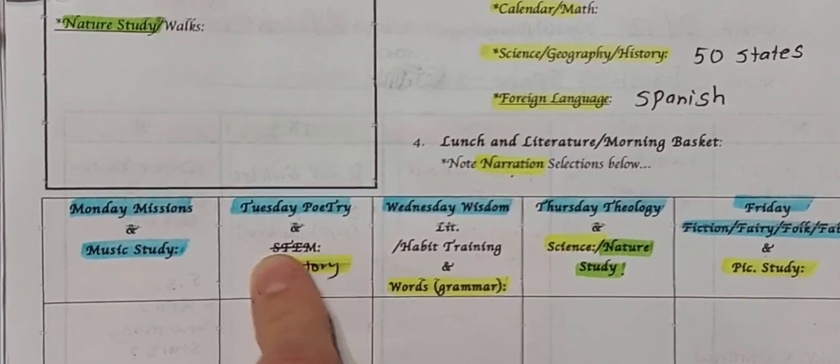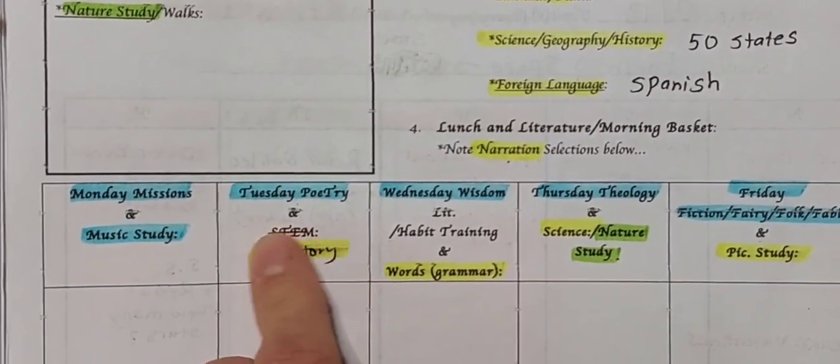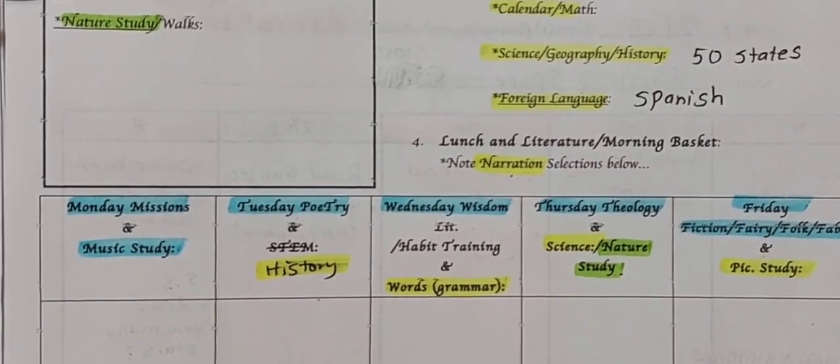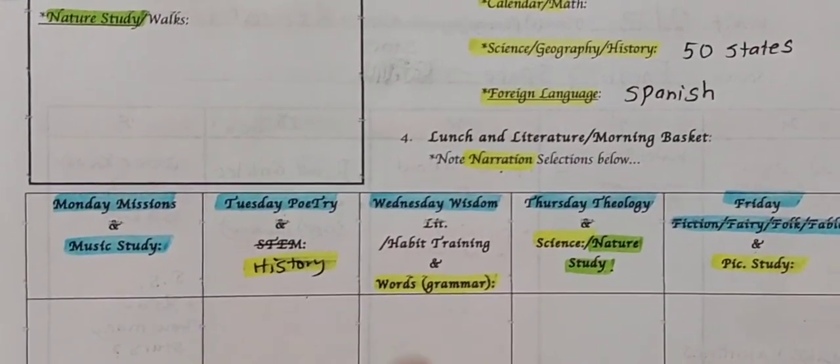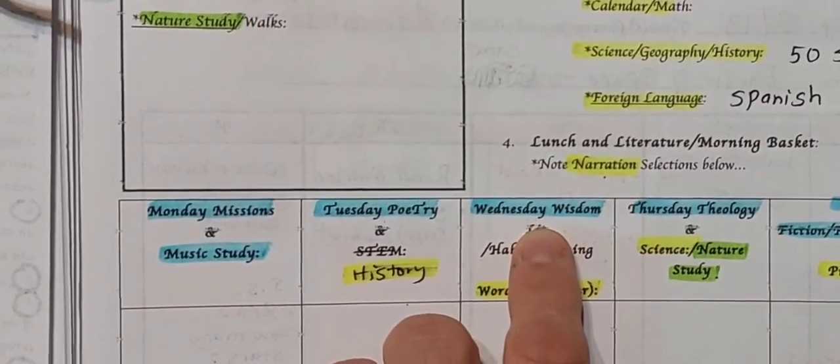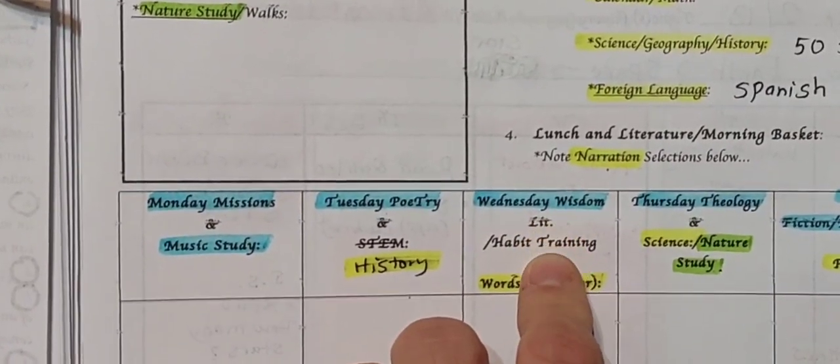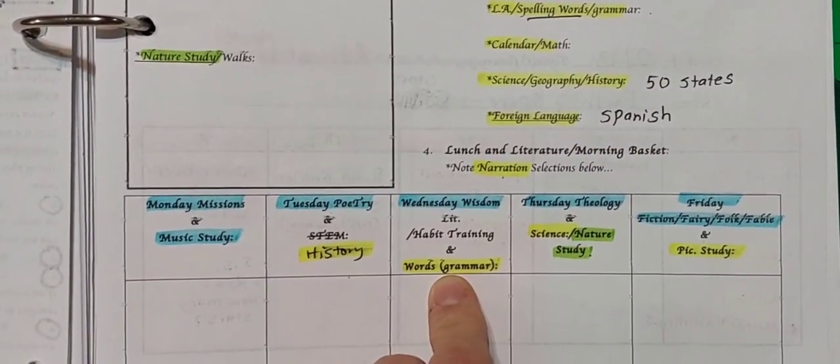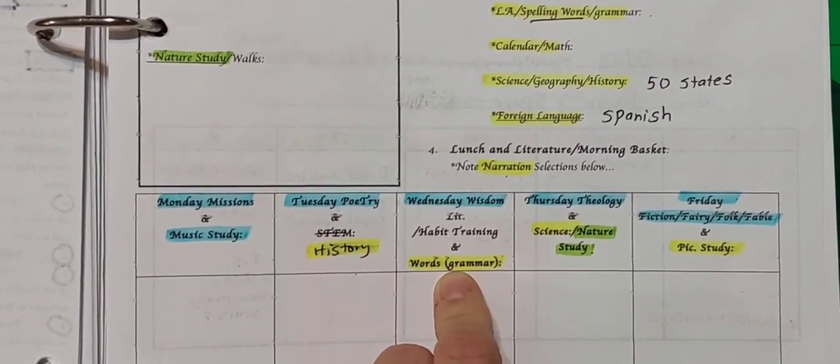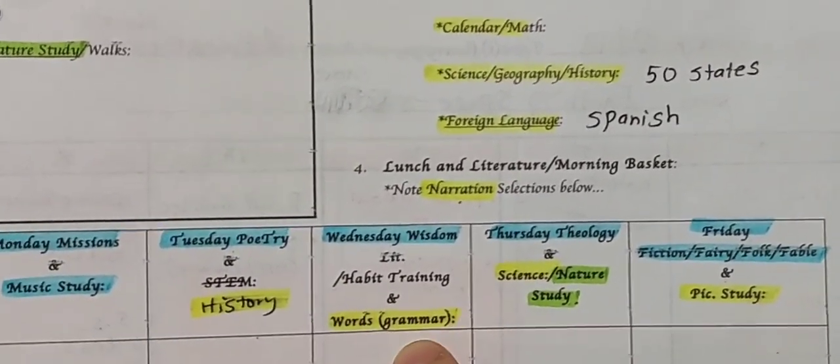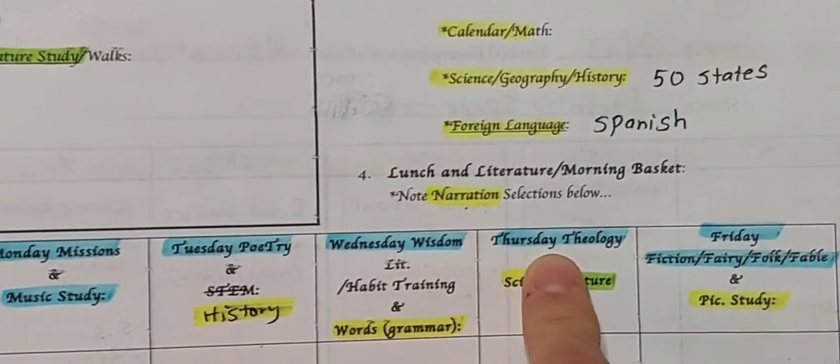Tuesday poetry reading and maybe an ongoing book of history, short history stories. Might not do that this month or even this year that much because we're getting our history, as you will see through our unit studies with journey through the continents and holidays. Wednesday wisdom literature, like little short stories from Proverbs, and that can relate to habit training. And then we do like a little short reading from our DK grammar book, little mini lessons, parts of speech, and just punctuation, things like that.